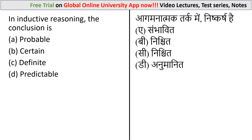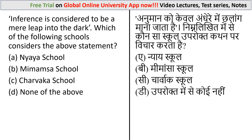Question: In inductive reasoning, the conclusion is — options given are: probable, certain, definite, and predictable. Inductive reasoning is a method of reasoning in which premises are viewed as supplying some evidence but not fully assured for the truth of the conclusion. The correct answer is option A: in inductive reasoning, the conclusion is probable.